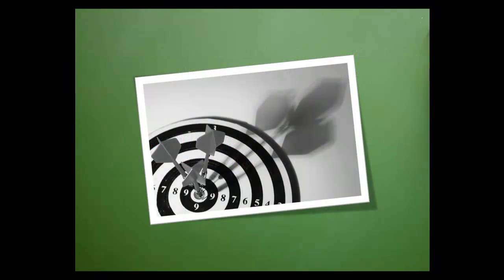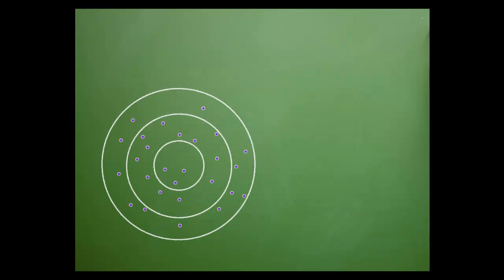A bullseye target is frequently used to illustrate accuracy and precision. If your values are placed randomly around the target, you're neither precise nor accurate.